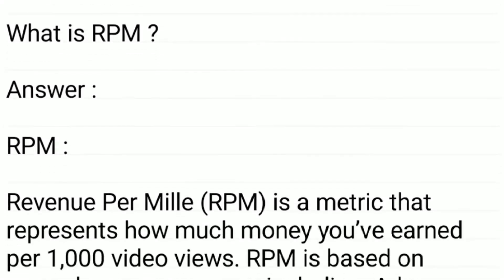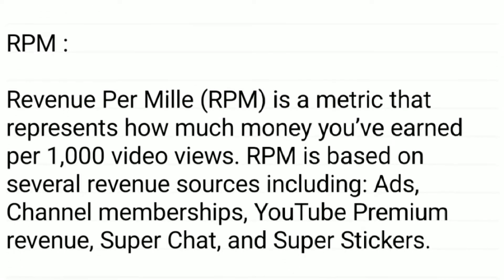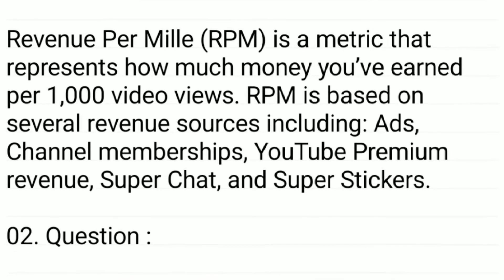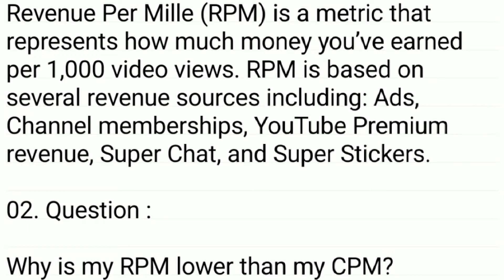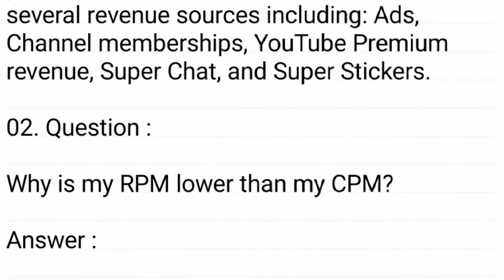What is RPM? RPM, or Revenue Per Mile, is a metric that represents how much money you have earned per 1000 video views. RPM is based on several revenue sources including ads, channel memberships, YouTube Premium revenue, Super Chat, and Super Stickers.